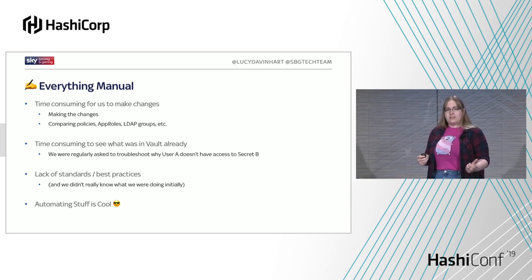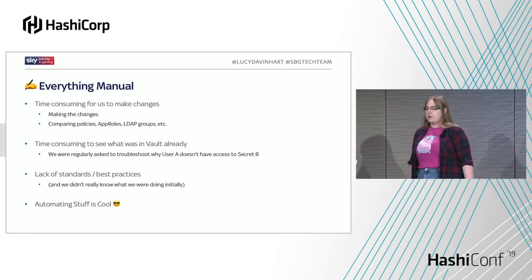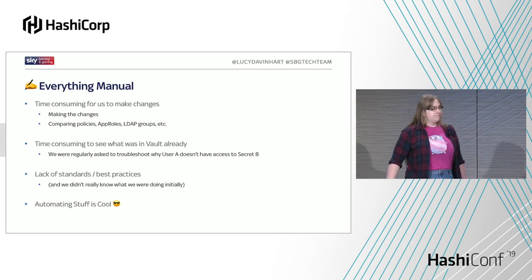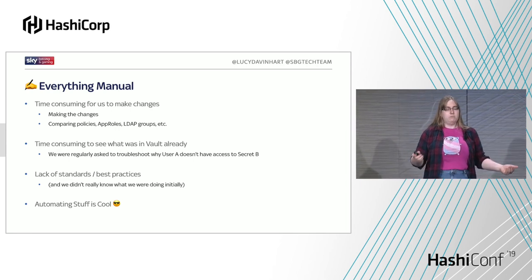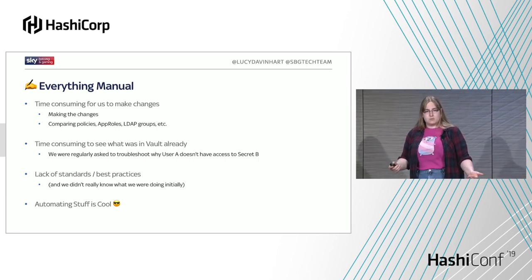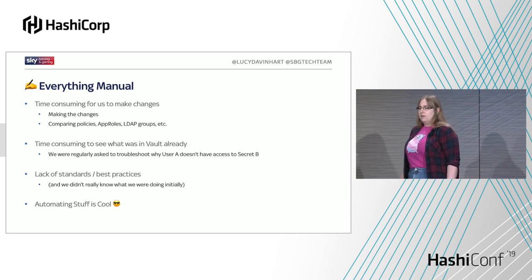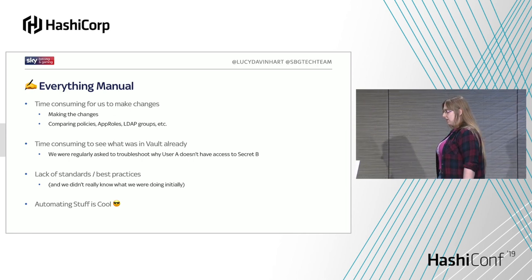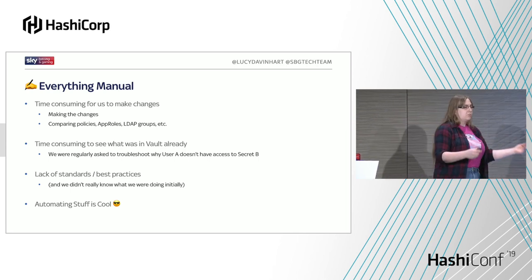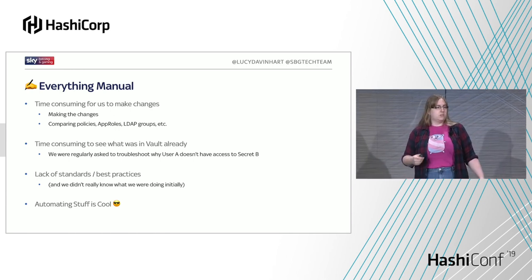I like to think we're pretty good at config management at SBG. Installing and running Vault was reasonably well automated, but configuring it once it was live — we did all that manually. Doing stuff manually, especially when we were brand new to the product, was naturally going to take a while. But even as we gained experience, certain things just took a long time — not just the time to configure Vault, but also how long it takes to debug things. When someone comes to you and says 'I don't have access to this secret, why not?' — that took a while to debug.